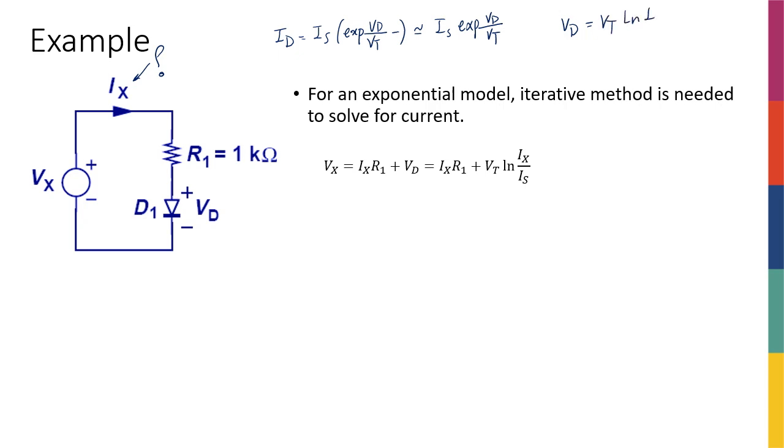Or we could rearrange this equation and say that vd is equal to vt times ln of id over is. In these equations, vd is the diode voltage across the diode, id is the current through the diode, is is the reverse saturation current which is given, and vt is also given. It's 26 or sometimes for ease of math they give us a vt of 25 millivolts. So if it's not given to you assume it's 26 millivolts. We have voltage and current relationship for the diode and I want to find the current.